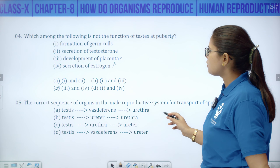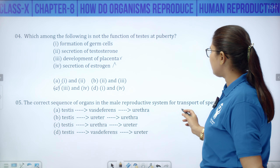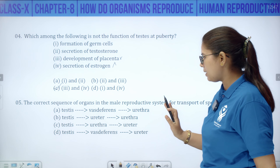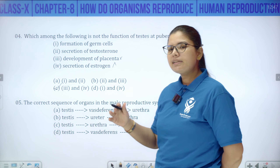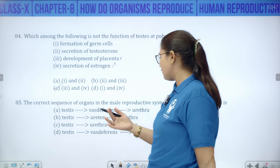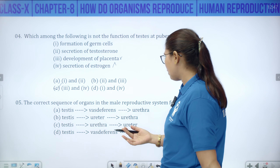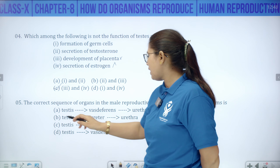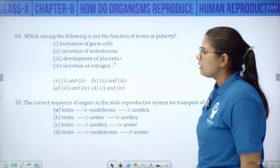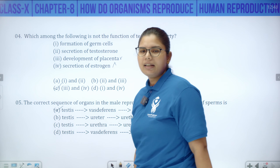The correct sequence of organs in the male reproductive system for transport of sperm is: testes → vas deferens → urethra. That is the correct sequence.